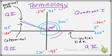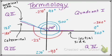You can also have a coterminal angle that is negative. So if a full circle is 360, and then you subtract 140, you'd get 220. So this angle is negative 220, and they are all coterminal because they all end in the same spot.